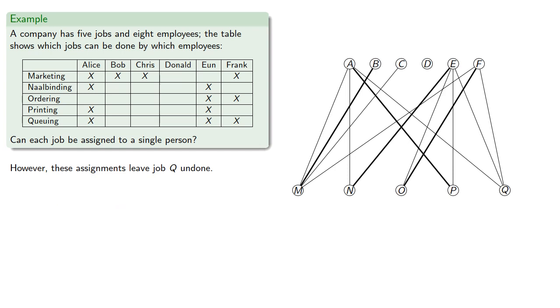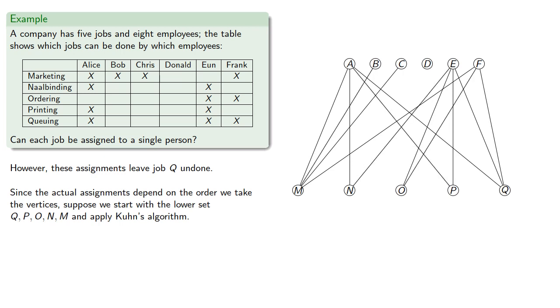Now, since the actual assignments depend on the order we take the vertices, suppose we start with the lower set, Q, P, O, N, M, and apply Kuhn's algorithm, and we'll also take the opposite in reverse order.